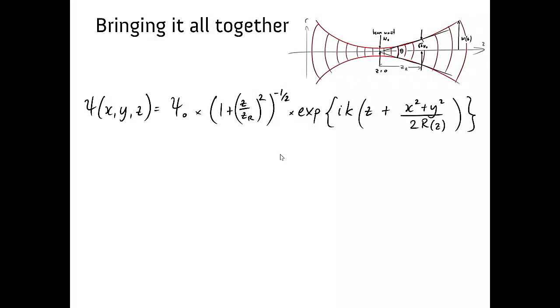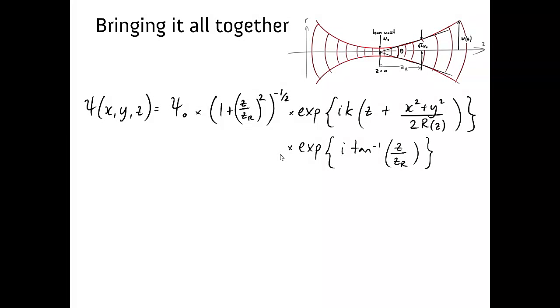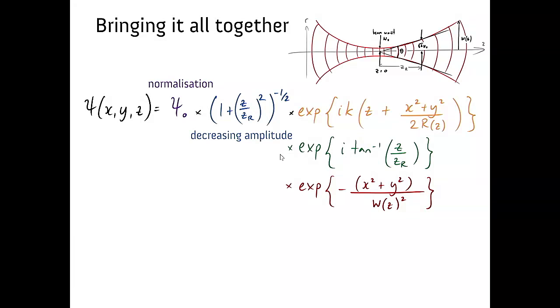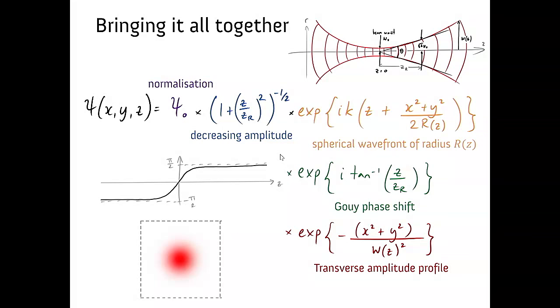So bringing it all together, we write down the final expression for psi, any one component of the electromagnetic field. We had this decreasing amplitude term, the spherical wave fronts in the paraxial approximation, the Gouy phase shift and the amplitude profile. So this is all the physics of a Gaussian beam and we've done it from Maxwell's equations on some guy's tattoo.